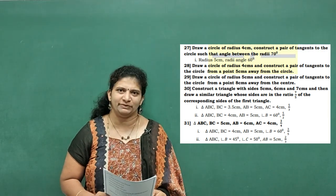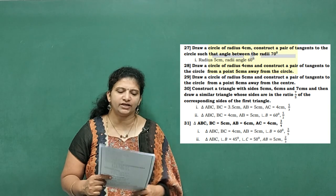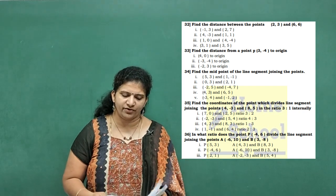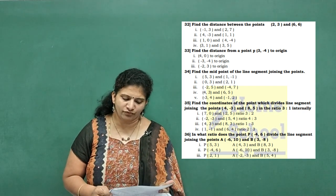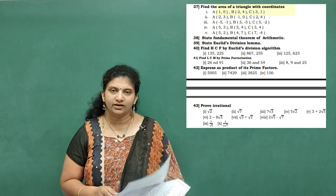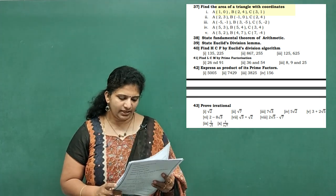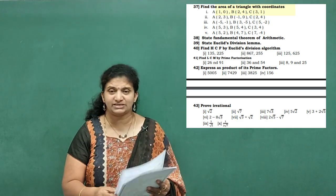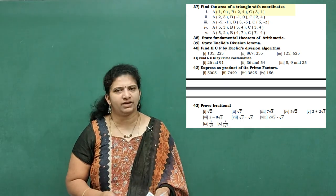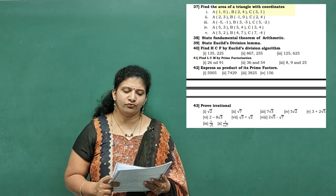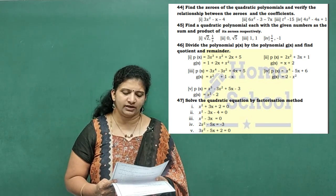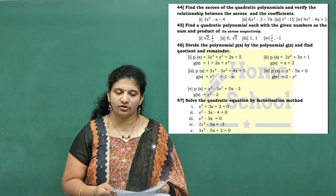Without these questions we cannot expect any question paper. From problem 32 onwards — Coordinate Geometry: distance between two points, distance from origin, midpoint, section formula with ratios, and area of a triangle. Then real numbers: state the Fundamental Theorem of Arithmetic, Euclid's division statement, HCF, LCM, product of prime factors, and proving irrational — one compulsory question. From problem 44 onwards — Polynomials: finding zeroes, sum and product, framing a polynomial, and division of polynomials.